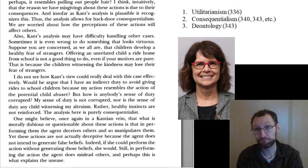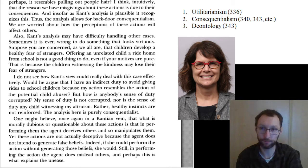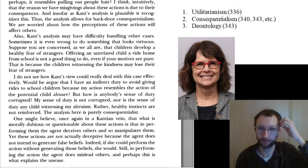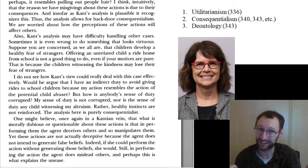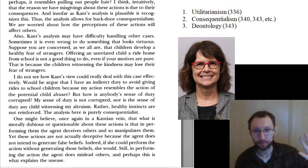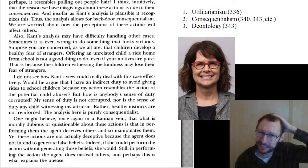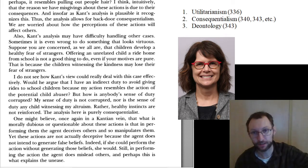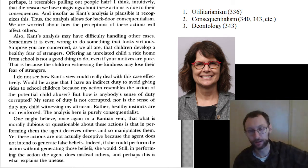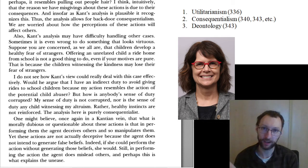This is often illustrated with the classic unwilling organ donor example. Imagine you could painlessly kill one person, take their organs, and donate them to five people who will otherwise die. From a utilitarian view, this might maximize utility — five deaths versus one death, five people getting pleasure versus one. But deontologists push back and say it's unjust or unfair to kill an innocent person just for the sake of promoting utility.